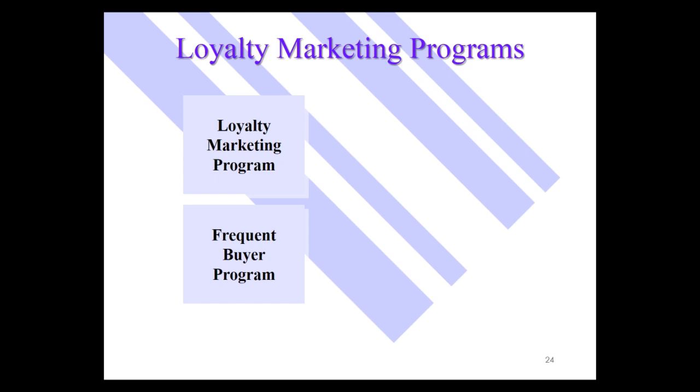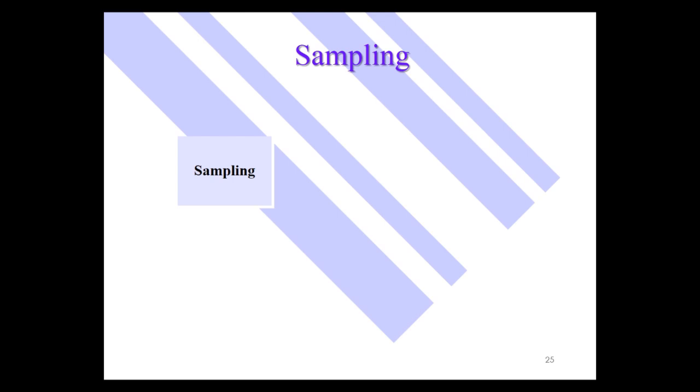One final promotion tool is sampling — giving the product or a sample away for free. This is one of the very best promotion techniques because of AIDA: Awareness, Interest, Desire, Action. When you sample, you give them the product, they're actually acting and trying it, and if they like it, you'll have repeat business. Of course, if they don't like it, you'll have so-called trier rejecters. Those are the major aspects of advertising and the promotion elements of Marcon.